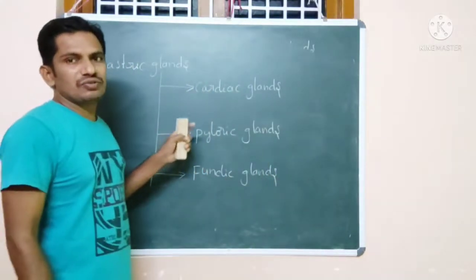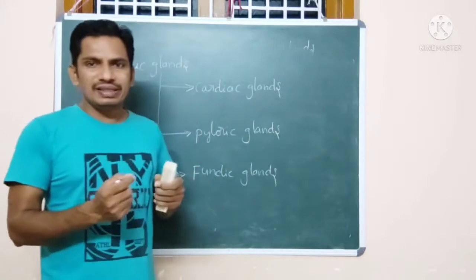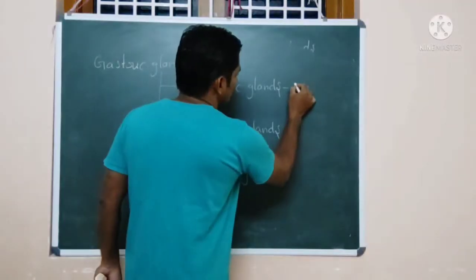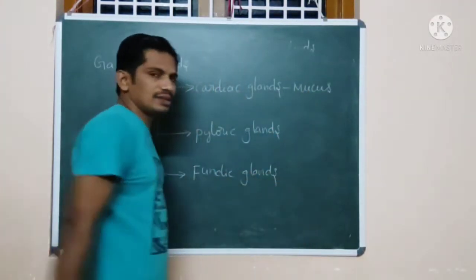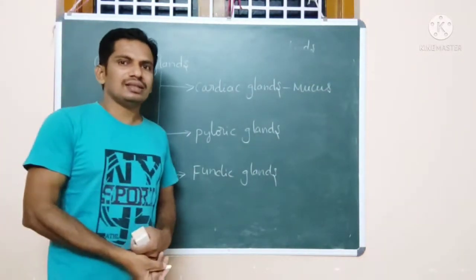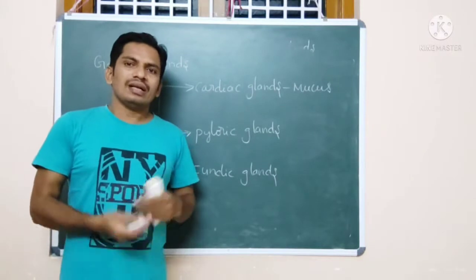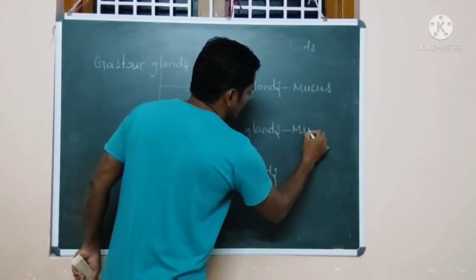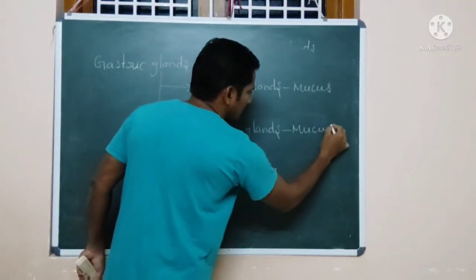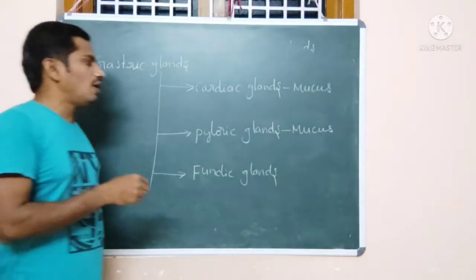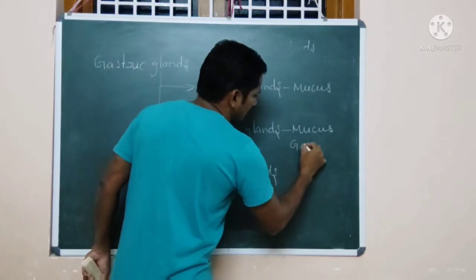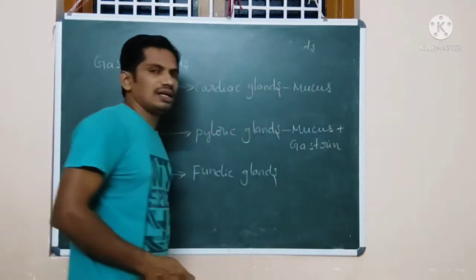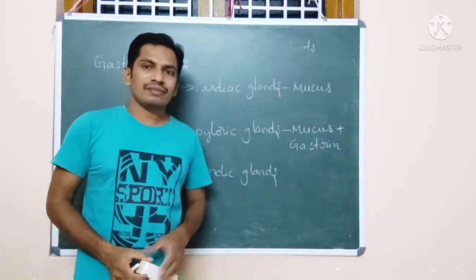These are the three types of glands present in the stomach, beneath the stomach walls. The cardiac glands secrete mucus, which helps to protect against HCl action. The pyloric glands secrete mucus and one more hormone — gastrin. So pyloric glands produce mucus plus gastrin.